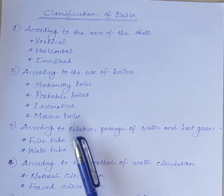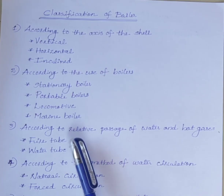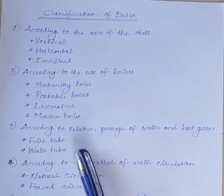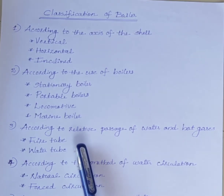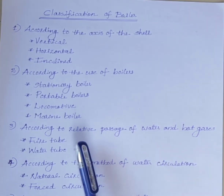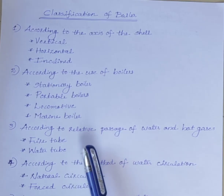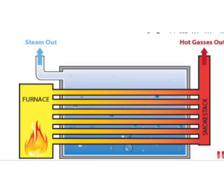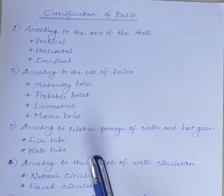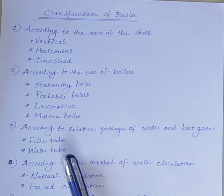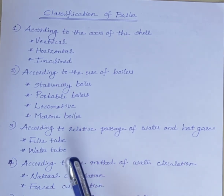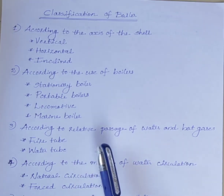The next classification is according to the relative passage of water and hot gases. There are two types: fire tube and water tube. In fire tube boilers, the hot gases are inside the tubes and the water surrounds the tube. In water tube boilers, the water is inside the tube and hot gases surround them.